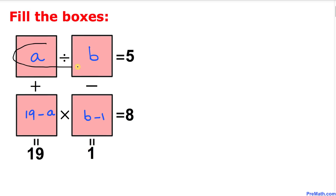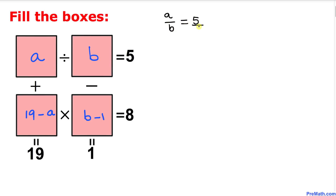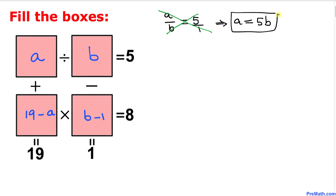Now let's look at the horizontal boxes. We have a divided by b equals 5. Writing 5 as 5 over 1 and cross-multiplying gives us a equals 5b.